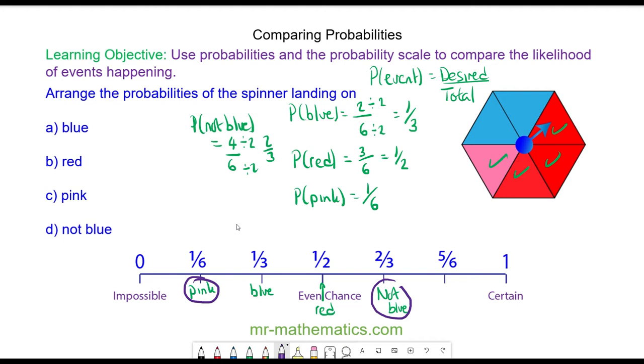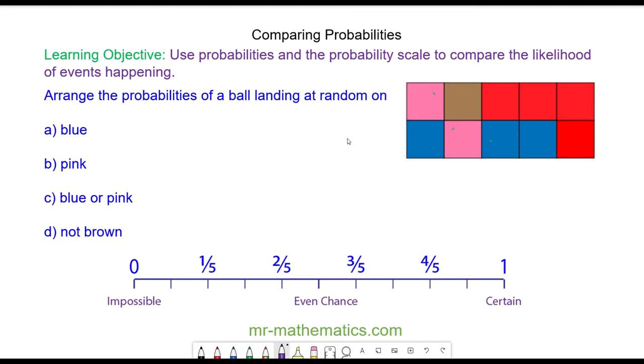Okay, let's try another question. So if you want to try and arrange the probabilities of a ball landing at random for question A, B, C and D on the probability scale, and then you can see which event is most and least likely to happen. You can do this by pausing the video and resume it when you're ready.